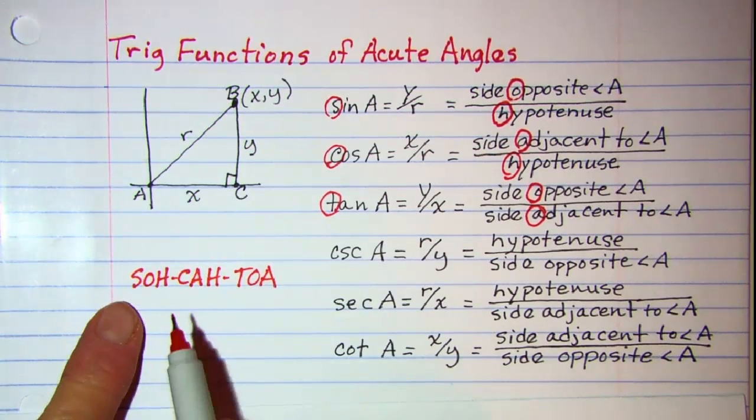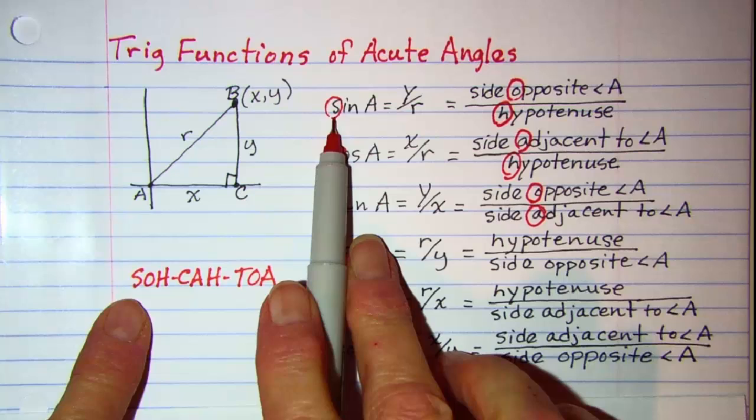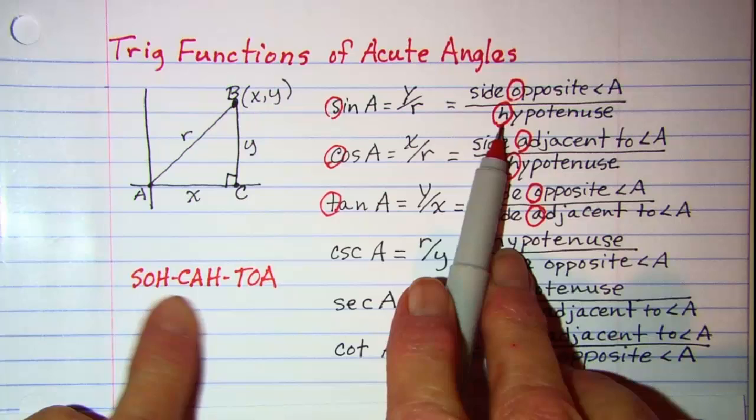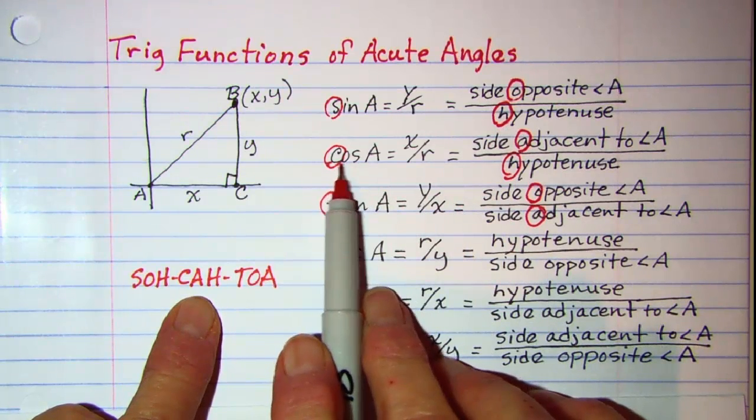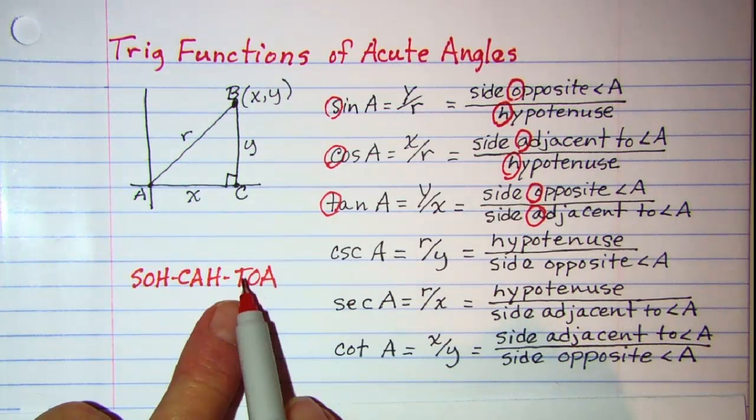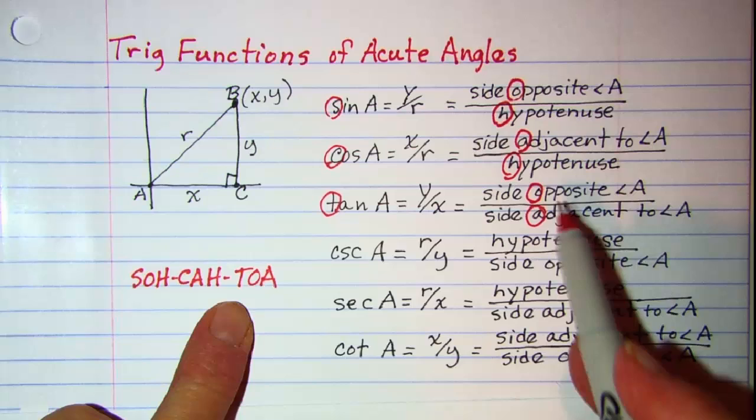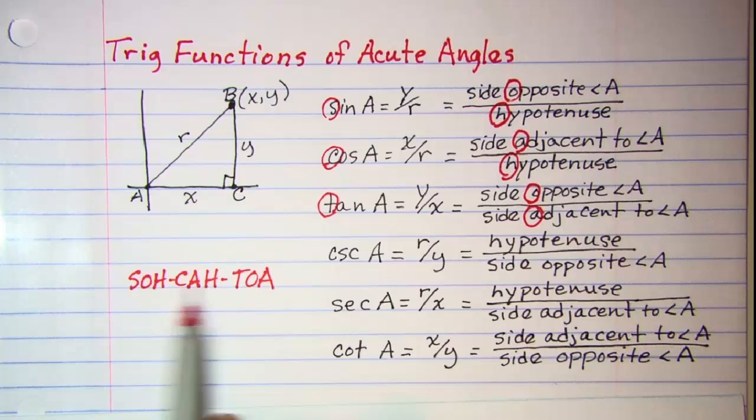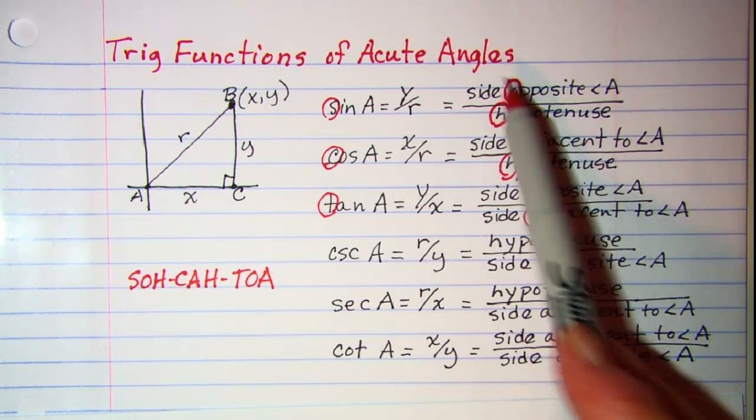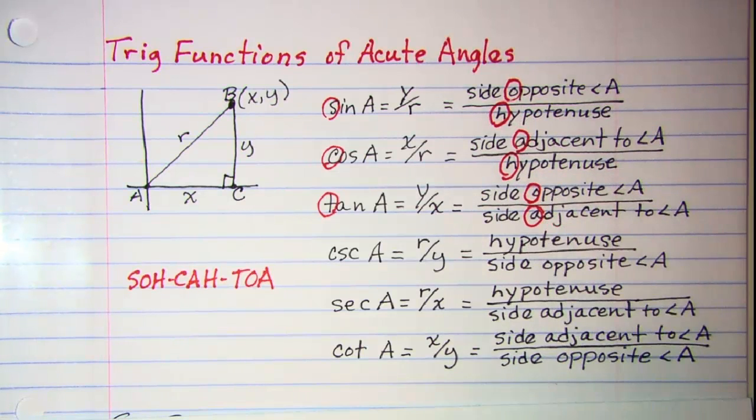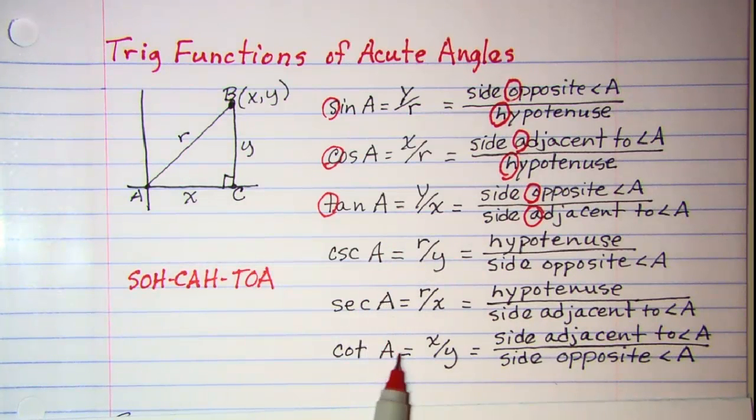And the S stands for sine, and it is opposite over hypotenuse. The C stands for cosine, and it is adjacent over hypotenuse. And the T stands for tangent, and it is opposite over adjacent. SOHCAHTOA helps you remember these definitions for the three trig functions. And then of course your reciprocal functions, you just flip these over.